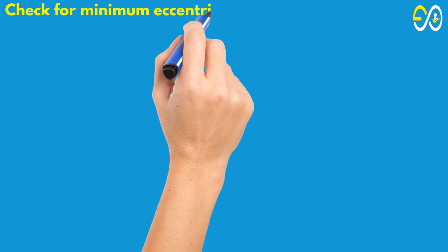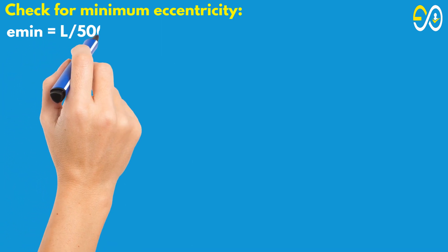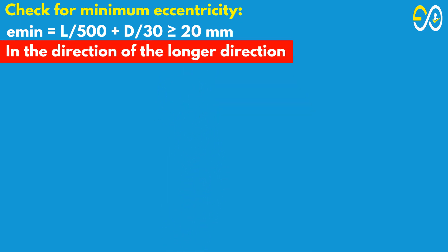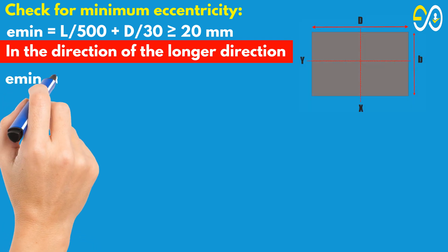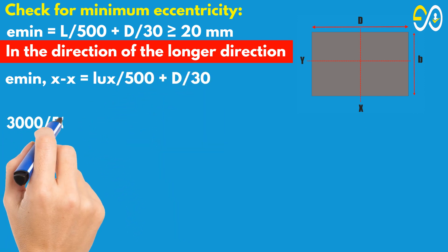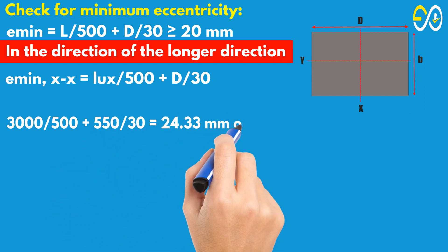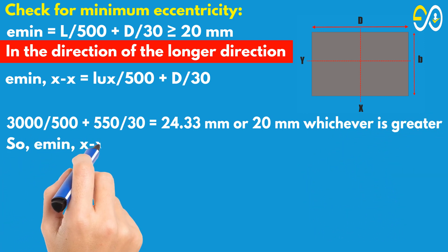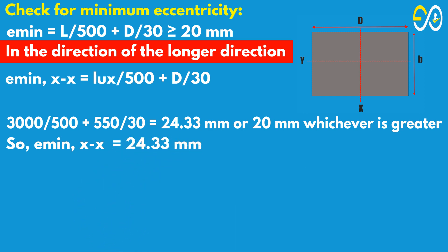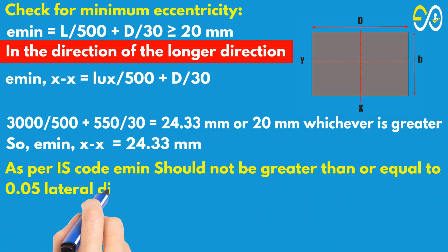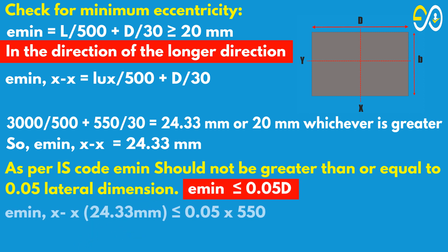Check for minimum eccentricity. Minimum eccentricity equals L upon 500 plus D upon 30, should be greater than or equal to 20 millimeters. In the direction of the longer dimension: e_min equals 3,000 upon 500 plus 550 upon 30 equals 24.33 mm or 20 mm, whichever is greater. So minimum eccentricity equals 24.33 mm. As per IS code, e_min should not be greater than or equal to 0.05 times lateral dimension: 0.05 times 550 equals 27.5 mm. Condition satisfied.